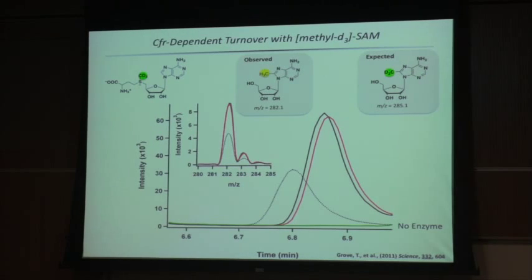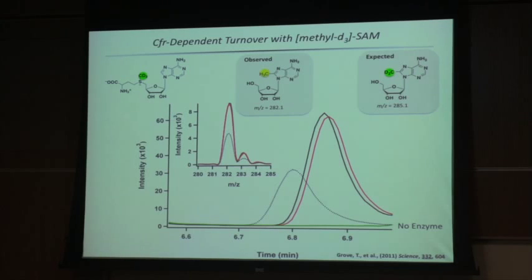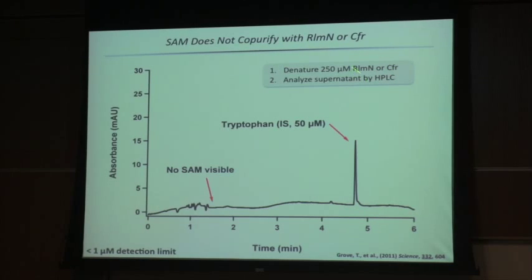We assumed perhaps SAM binds tightly to the enzyme and is already bound when we isolate it. We took 250 micromolar protein, denatured it, and analyzed by standard HPLC. No S-adenosylmethionine was present. So we have a clear problem. At this point, we decided that perhaps the methyl group is already located somewhere on the protein itself.